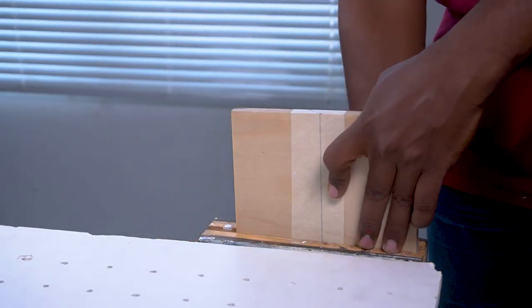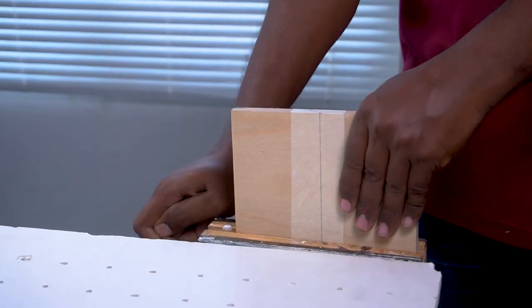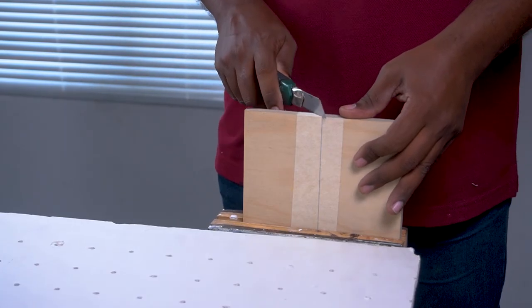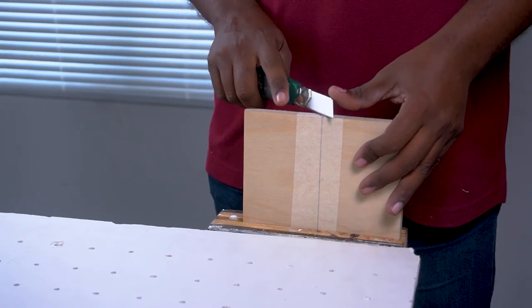Clamp the wood on a bench vise. If you don't have a bench vise, clamp the material on the side of your work table using a quick grip clamp. Using a utility knife, scour the wood's edge to give the hand saw some seating while beginning the cut.